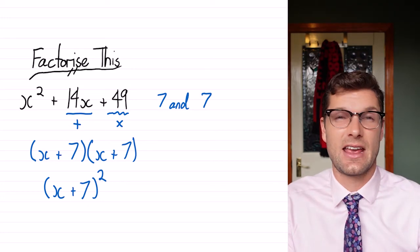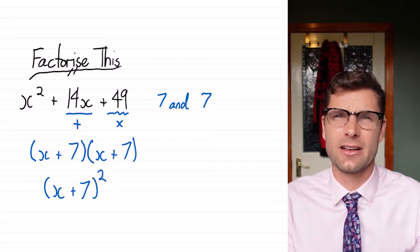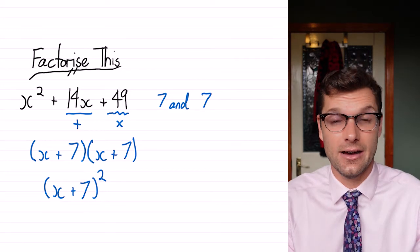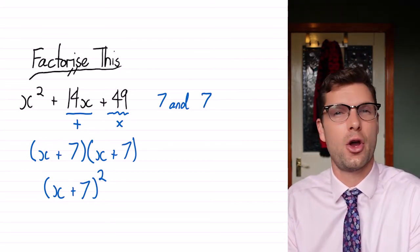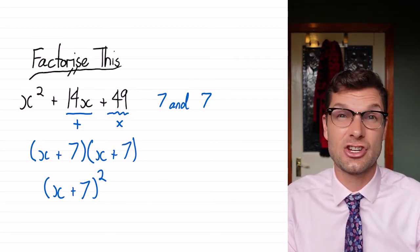So this is exactly the same as how we've been doing our factorizing beforehand. If anything, it's actually a little bit easier because we know straight away that there's a perfect square at the back, so we just have to check that middle number.